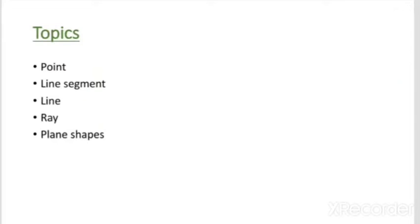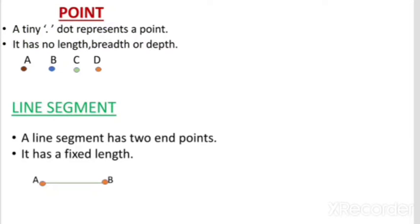What is a point? A tiny dot represents a point. It has no length, breadth, or depth. For example, the brown dot represents point A, the blue dot represents point B, the green dot represents point C, and the orange dot represents point D.